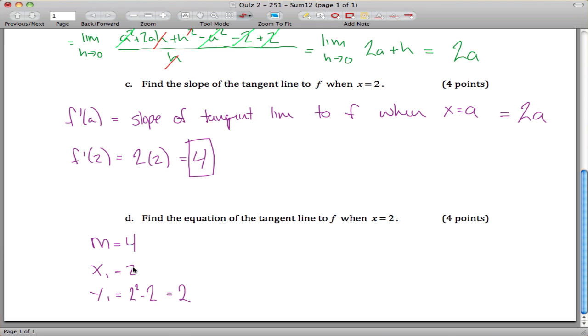So the reason I plug this into the original function is because the tangent line to f when x equals 2, to come up with the equation of that line, I need a point on that line and the slope. I got the slope from looking at the derivative, but to get a point on that line, I will use the point that's on the curve. So the point that's on the curve is 2 comma 2, which I got from here.